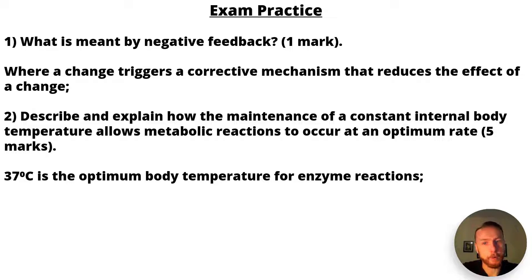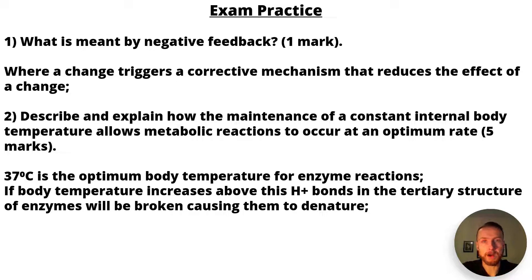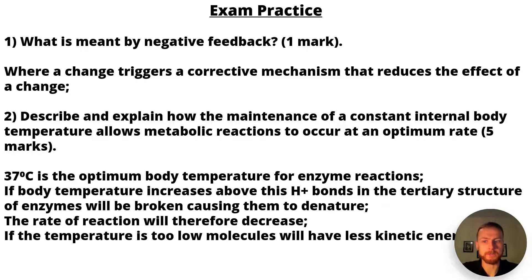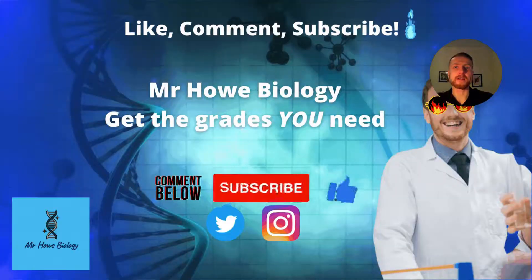Your first mark is for saying 37 degrees is the optimum body temperature for enzyme reactions. Second: if body temperatures increase above this, hydrogen bonds in the tertiary structure of enzymes will be broken, causing them to denature. Third: the rate of reaction will therefore decrease. Your fourth mark is for saying if the temperature is too low, molecules will have less kinetic energy. Your final mark is for saying therefore there will be less chance of a successful collision between enzyme and substrate, and fewer enzyme-substrate complexes.